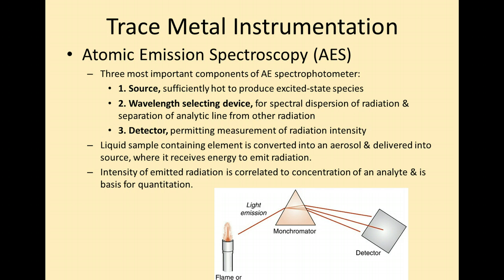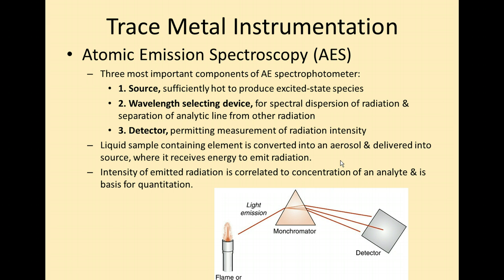A couple types of instrumentation are used when testing for trace elements. Atomic emission spectroscopy and atomic absorption spectroscopy are the two types. In atomic emission spectroscopy, a flame serves as the light source; the light is emitted through a monochromator to a detector on the other side. The liquid patient sample is converted into an aerosol, delivered to the source, receives energy to emit radiation, and that radiation is then detected.